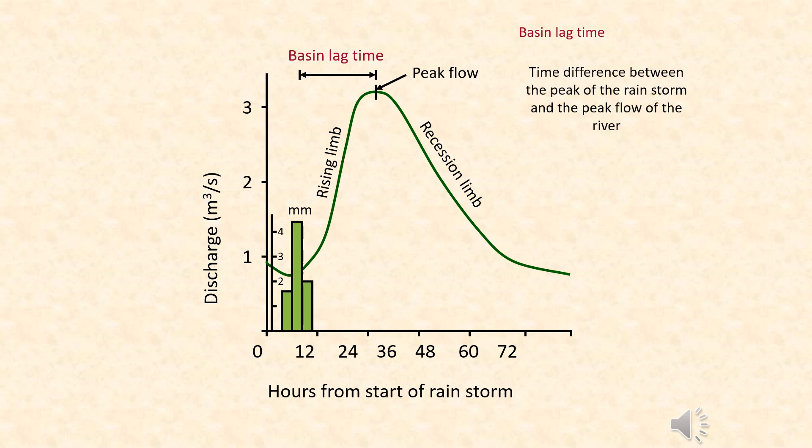The basin lag time is a very important number. It represents the time difference between peak precipitation time and peak flow time on discharge. The shorter the basin lag time, the more likely the river is to act in a very flashy way — meaning more water enters the river faster, possibly breaking its banks, and therefore the more likely it is to flood.